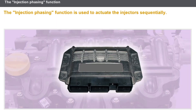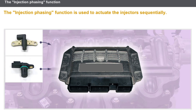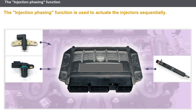The injection phasing function is used to activate the injectors sequentially. This function uses the following components: the flywheel sensor, the cylinder reference sensor, and the injectors.